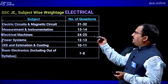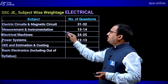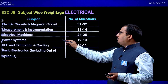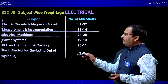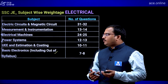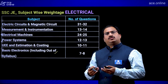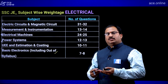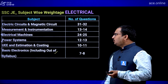For Electrical Engineering weightage: Electrical Circuits and Magnetic Circuits 31–32 marks, Measurement and Instrumentation 13–14 marks, Electrical Machines 24–25, Power Systems 12–13, Utilization and Estimation and Costing 10–11, and Basic Electronics 7–8 marks — some of which are out-of-syllabus topics. No need to worry; with thorough preparation you can answer those questions too.